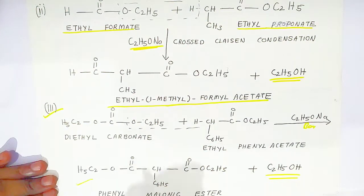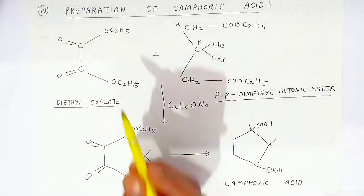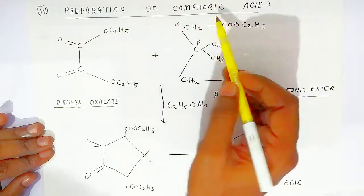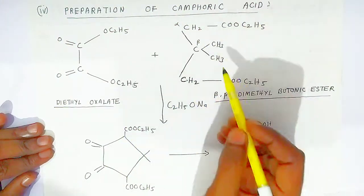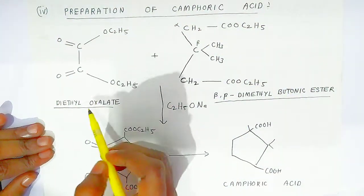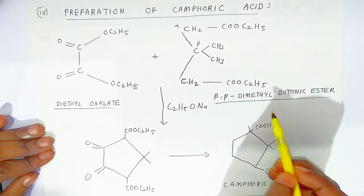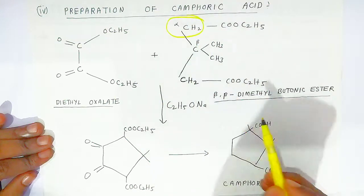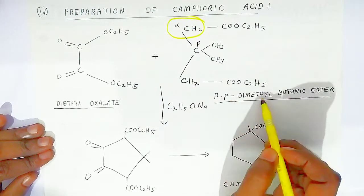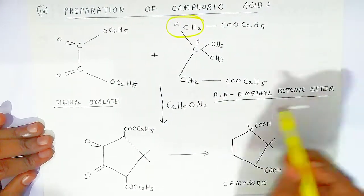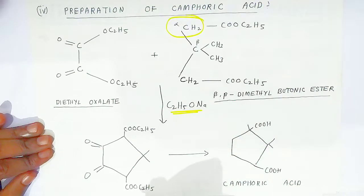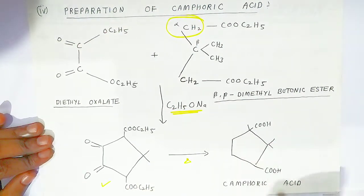These are very important applications. The fourth application is the preparation of camphoric acid. Here you require diethyl oxalate and a second ester having alpha hydrogen — beta,beta-dimethyl butanoic ester. In the presence of base, they react, and after heating the product gives camphoric acid.